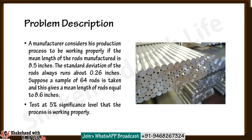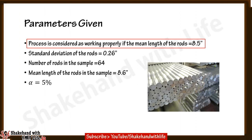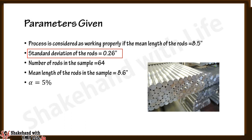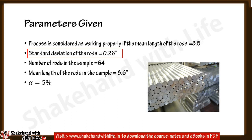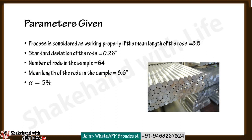Test at a 5% significance level and conclude whether the process is working properly or not. Note down the parameters given in the problem: the process is considered as working properly if the mean length of the rods is 8.5 inches, the standard deviation is 0.26 inches, number of rods in the sample is 64, and the sample mean length is 8.6 inches.